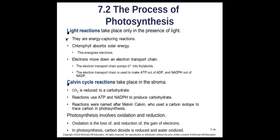The light reactions capture energy coming from the sun through chlorophyll absorbing solar energy, which excites or energizes electrons. Those electrons move down an electron transport chain, which pumps hydrogen ions into the thylakoids. The electron transport chain then uses that pumped hydrogen to make ATP from ADP, and makes NADPH from NADP+. NADPH is a coenzyme — a cofactor necessary for this enzymatic reaction to take place.